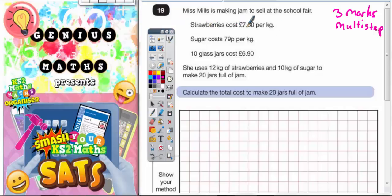So let's have a read. Miss Mills is making jam to sell at the school fair. Strawberries cost £7.50 per kilogram. Sugar costs 79 pence per kilogram. And 10 glass jars cost £6.90. She uses 12 kilograms of strawberries and 10 kilograms of sugar to make 20 jars full of jam.